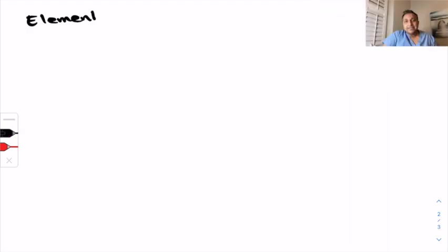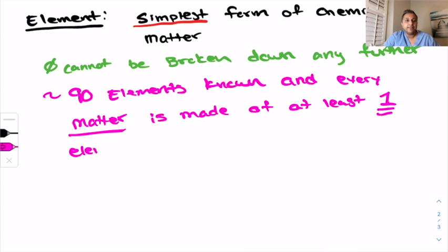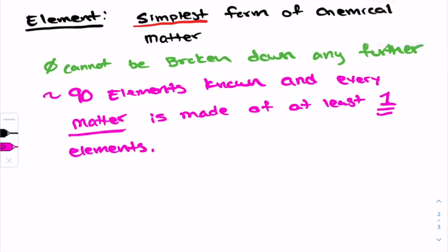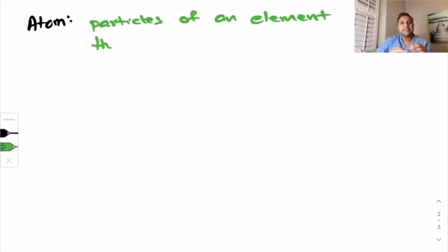The element is defined as the simplest form of chemical matter. It cannot be broken down any further. We know in this universe about 90 elements that every matter contains and is at least made up of one of these elements. What about an atom? An atom are particles of an element that still contain the identity of that element, such as, let's say, carbon or something like that.